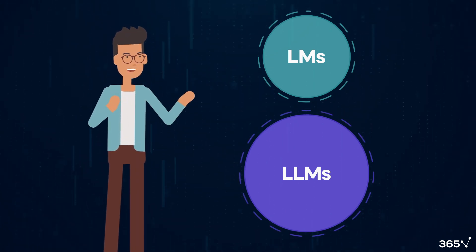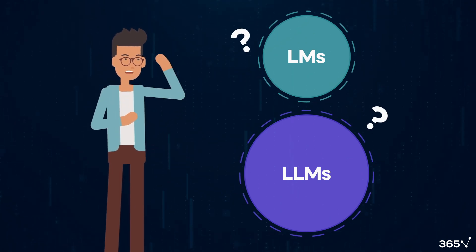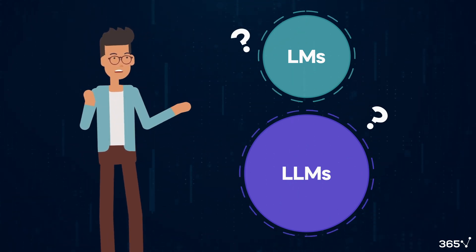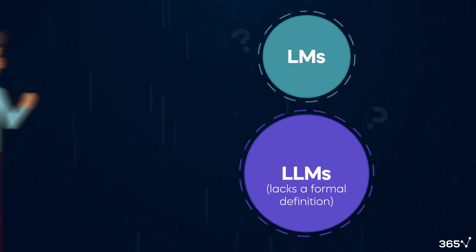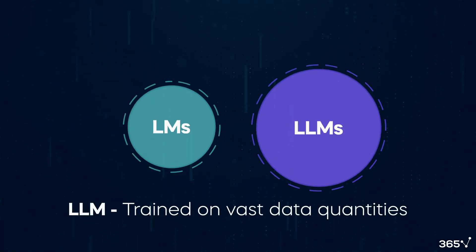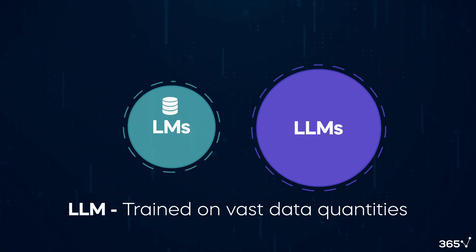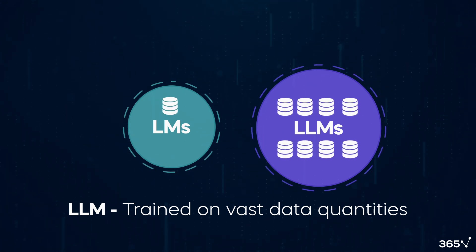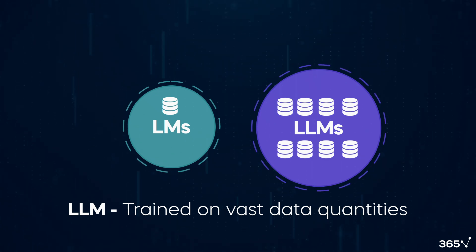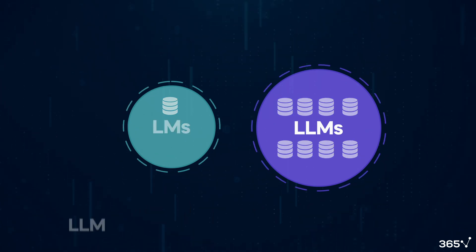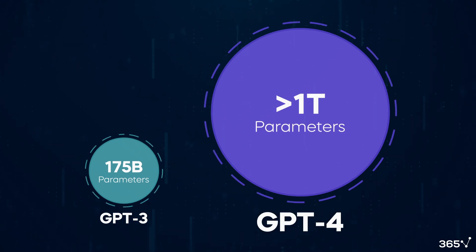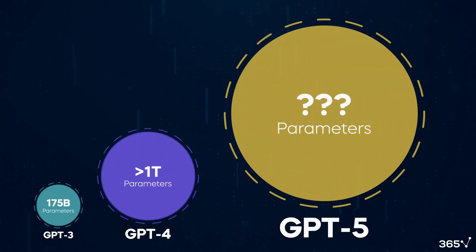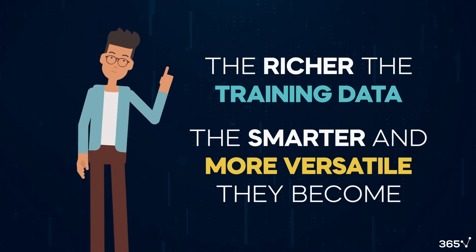Obviously, the difference between the two is size. But what size qualifies a language model as large? The term LLM lacks a formal definition and can be used quite flexibly. The term large language model reflects their training on vast data quantities, and this data volume continues to expand over time. So what is deemed large today will not be in a few years. For example, GPT-3 was trained on 175 billion parameters, GPT-4 over 1 trillion, and GPT-5 is likely to use even more. It's believed that the richer the training data for LLMs, the smarter and more versatile they become.